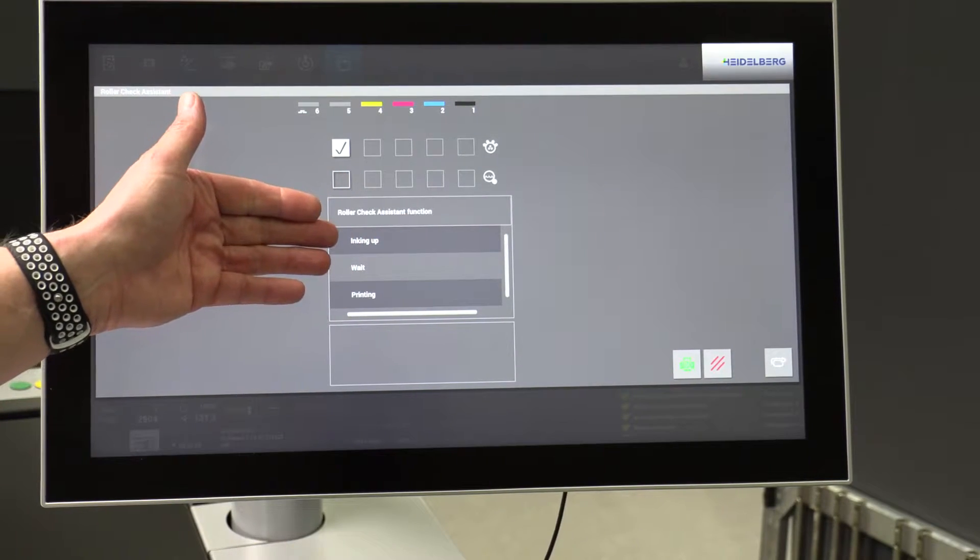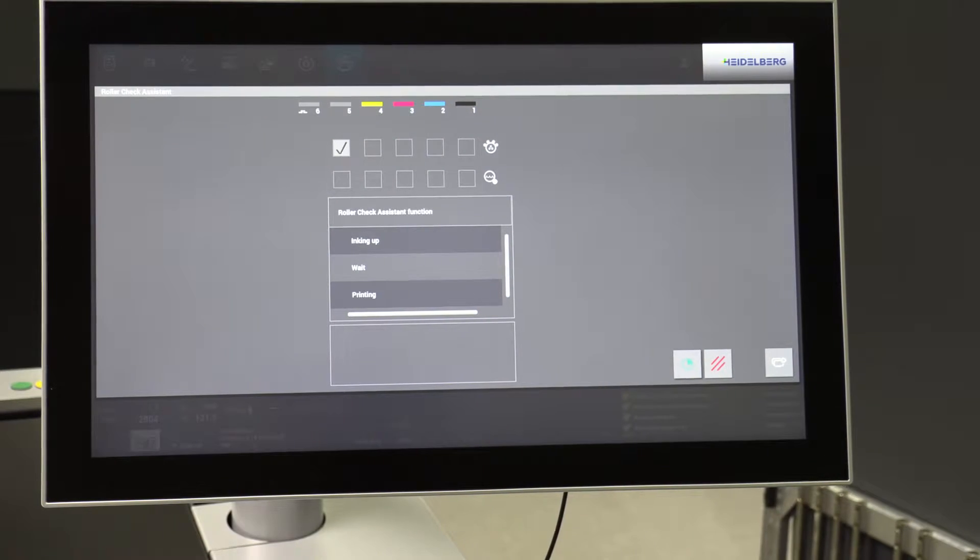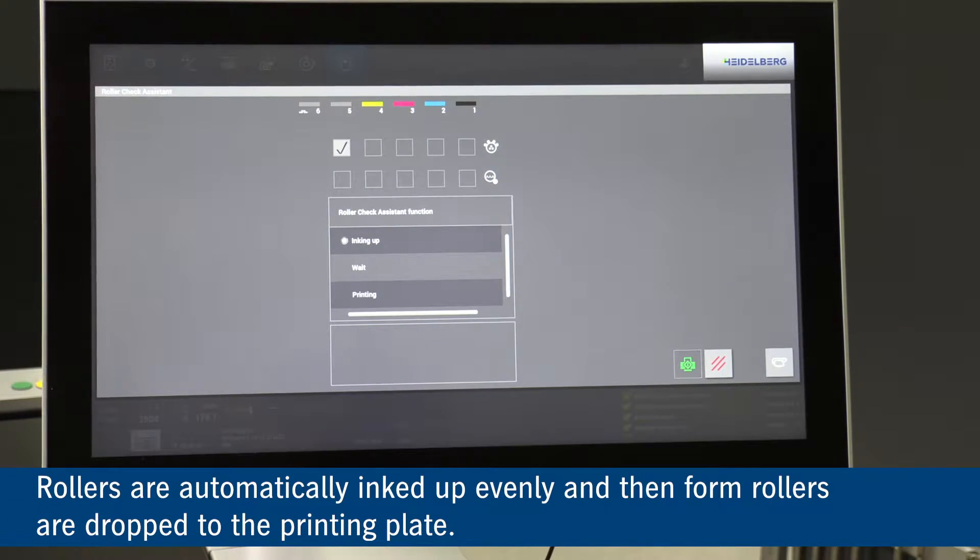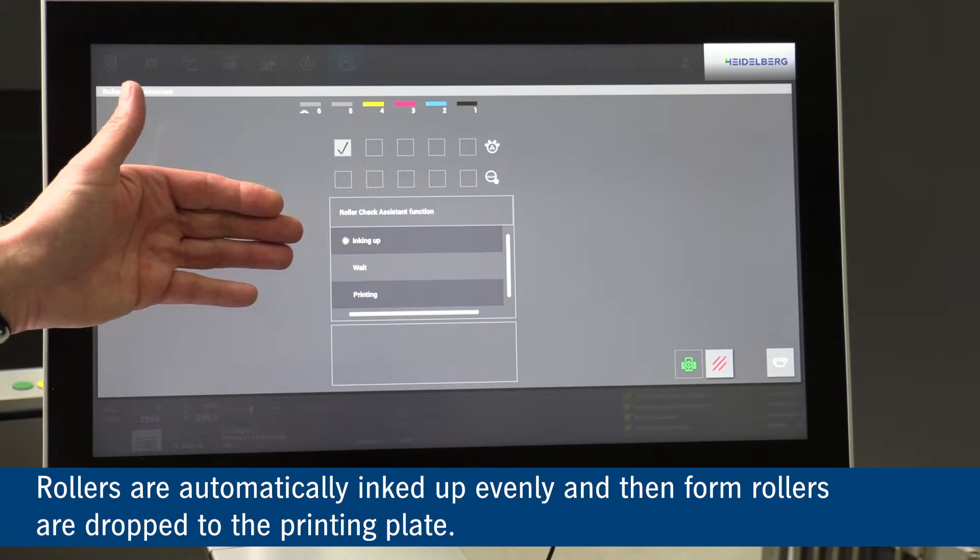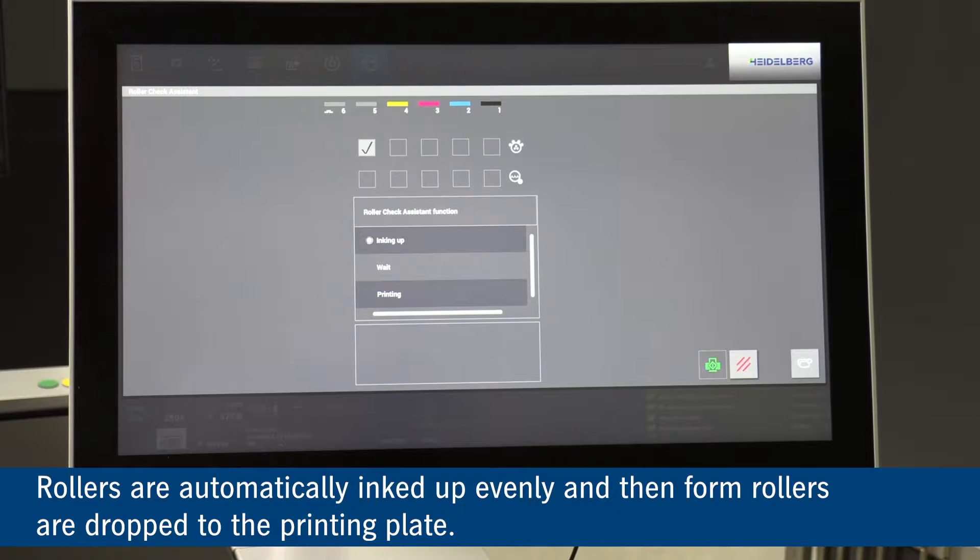It comes up with an option inking up, wait and printing. We then press to get the press going. So at the moment we are inking up and what this does is it actually inks up all the rollers and drops them into a certain position on the press.